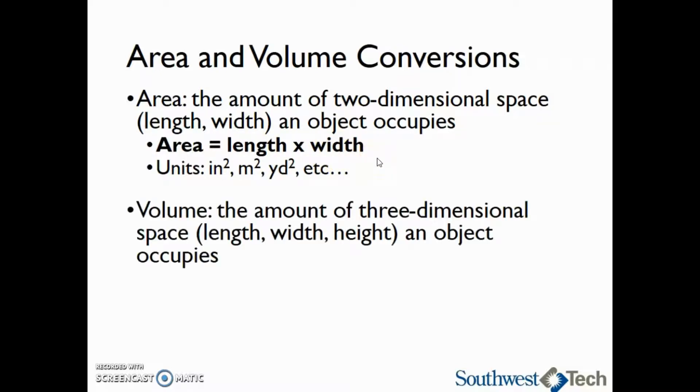Volume, on the other hand, is the amount of three-dimensional space, the length, the width, and the height, an object occupies. So if we are looking at a basic rectangular prism, the volume of this rectangular prism would be length times width times height.